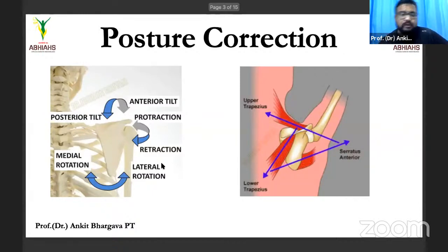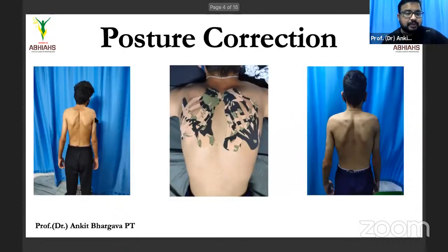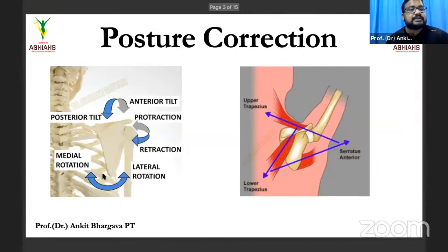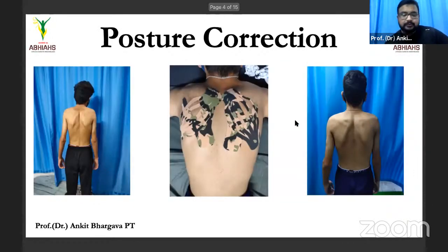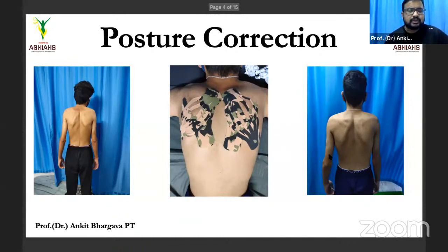This slide shows the basic anatomy of the scapula and how it works. When you do a shoulder flexion, it moves in a specific way. Looking at the patient's scapula position versus the normal position, you can see how much difference there is — the scapula comes very close to the spine when it should be in its normal place. We have to move it back. Approximately 10 to 12 more sessions are needed; we've started to see a gap developing, and once that gap normalizes, the scapula goes to its correct position.